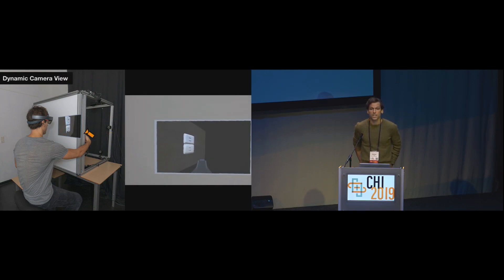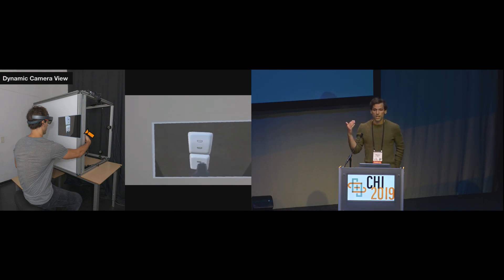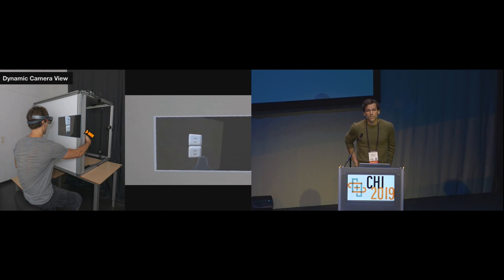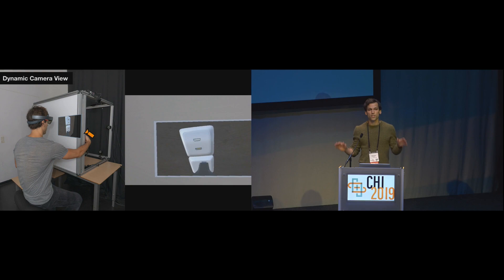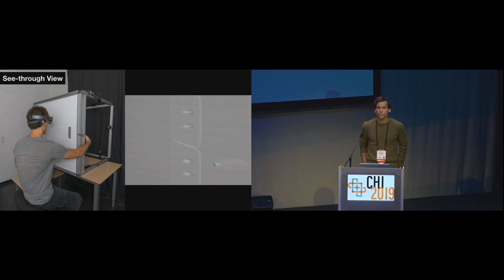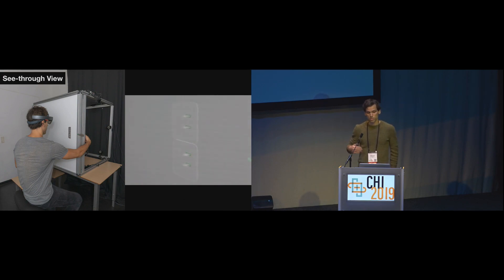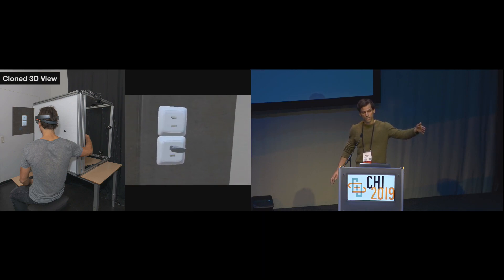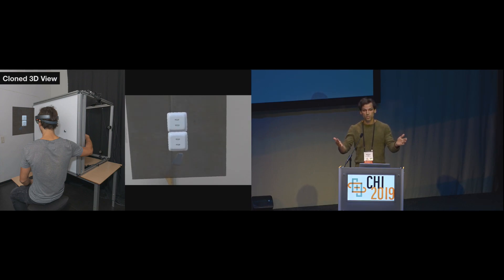The dynamic camera view simulates either a tool-mounted or finger-mounted camera — in the video, you see a camera mounted on the HDMI stick. The 2D imagery captured was rendered as a picture-in-picture view that follows the user's head movement. The third view, the see-through view, renders 3D models of the objects at the exact location of their physical counterparts — kind of like X-ray vision. Then we had the clone 3D view, which renders 3D models of the occluded objects at a displaced location: more than half a meter away on the left, and also rotated so the objects faced the participants.